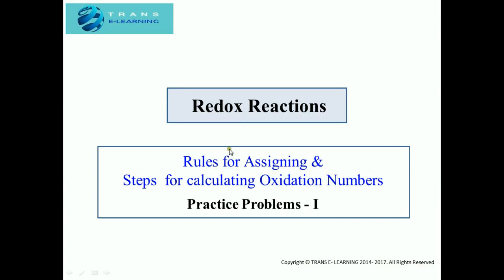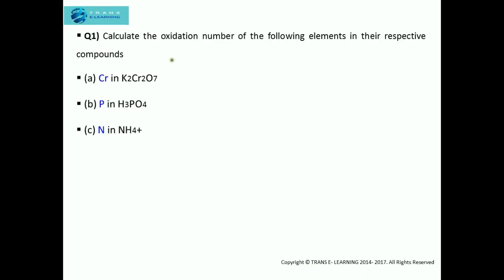Hello everybody. Welcome to Trans-E Learning chemistry videos. Today we'll be discussing redox reactions, and in that we'll be covering practice problems related to rules for assigning and steps for calculating oxidation numbers. The first question is: calculate the oxidation number of the following elements in their respective compounds — chromium in potassium dichromate, phosphorus in phosphoric acid, and nitrogen in ammonium ion.